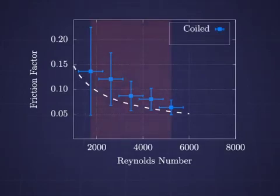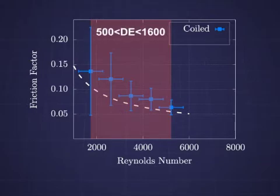The Reynolds number is between 1,700 and 5,200, which corresponds to Dean numbers between 500 and 1,600 with the given tube diameter and coil radius. These values are within the laminar portion of the coil friction factor formula.